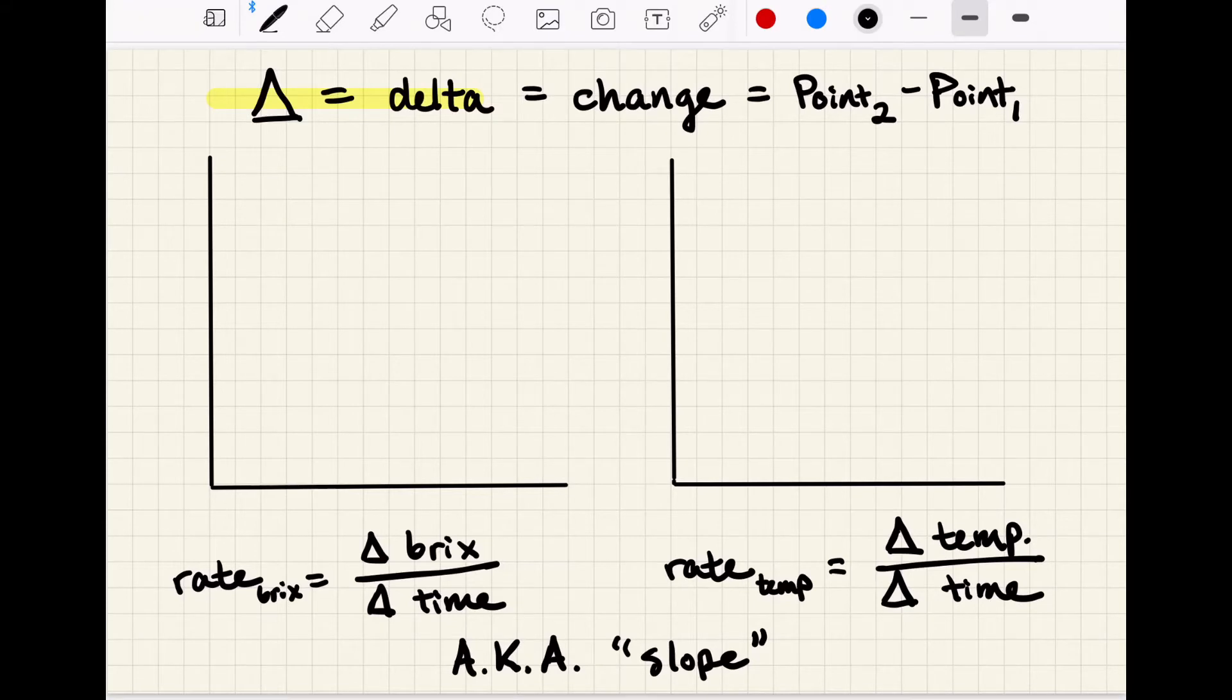We see this used most often with a change in value over time and we often show it on a graph with time on the x-axis on the bottom. This type of change over time is also commonly called a rate. So we can express rate as the change in bricks over the change in time or as the change in temperature over the change in time.